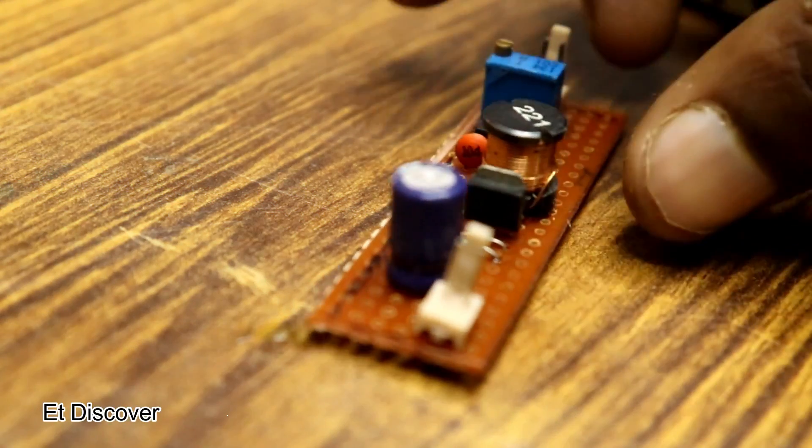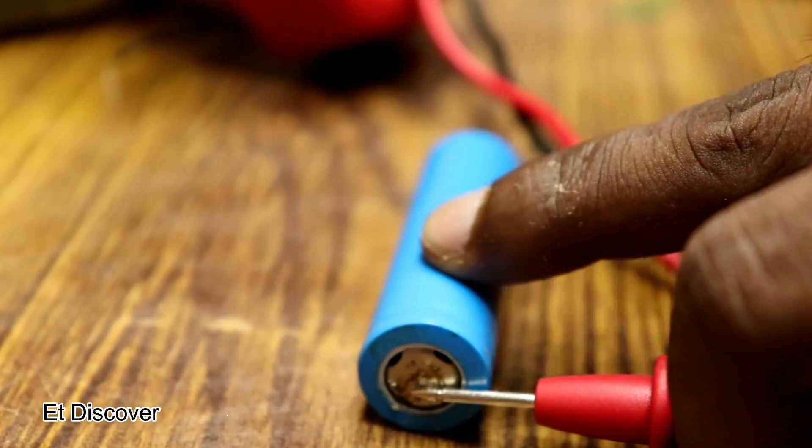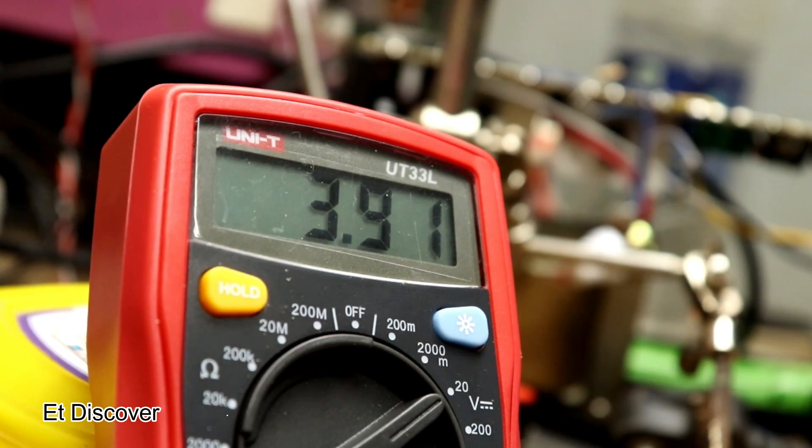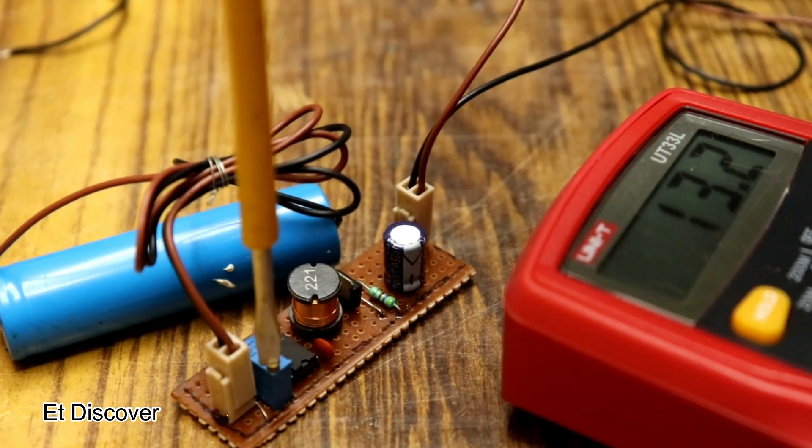After completing this circuit, it will look like this. I will check this out with a lithium battery. Lithium battery is 3.7V. Now, I will check how much voltage comes out from this boost converter.